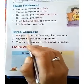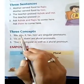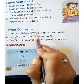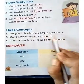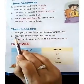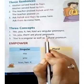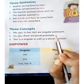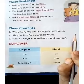Here are the three concepts which you should keep in mind. Me, you, it, her, him are singular pronouns. Singular pronouns are used for singular people. Us, you, them are plural pronouns. The plural pronouns are replacing plural people — more than one person.